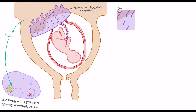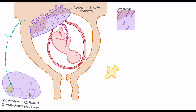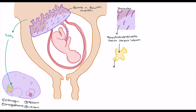As the syncytiotrophoblasts form, their first job is to release human chorionic gonadotropin (HCG), and this HCG allows the syncytiotrophoblasts to rescue the corpus luteum. The job in the first four months is to make sure the corpus luteum stays alive until the placenta fully forms. The corpus luteum secretes progesterone and estrogen — the two main hormones released to allow the endometrium to be further engorged and grow to support the fetus.